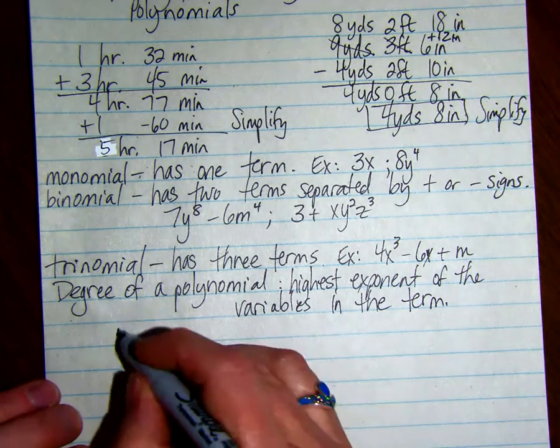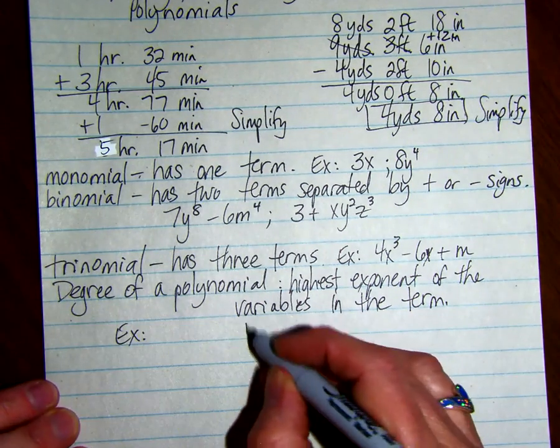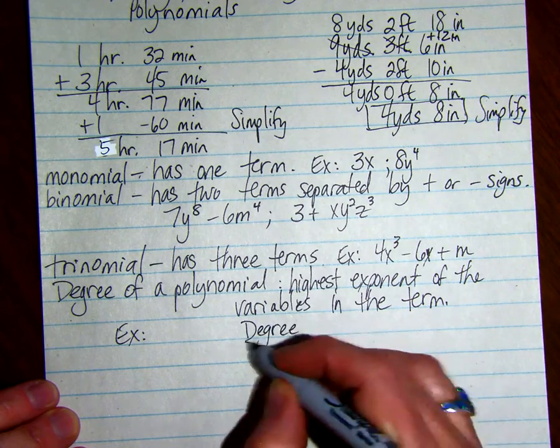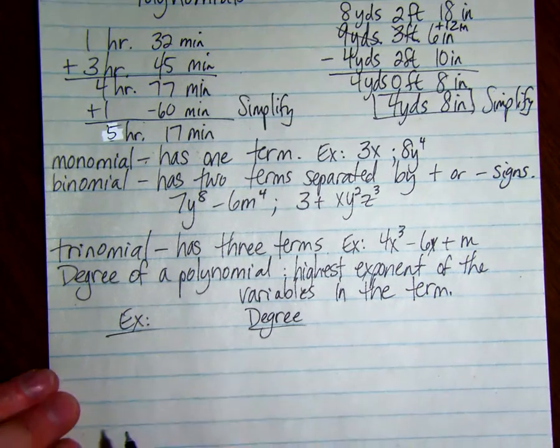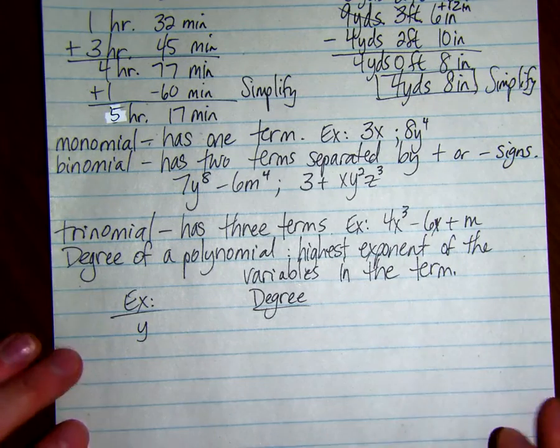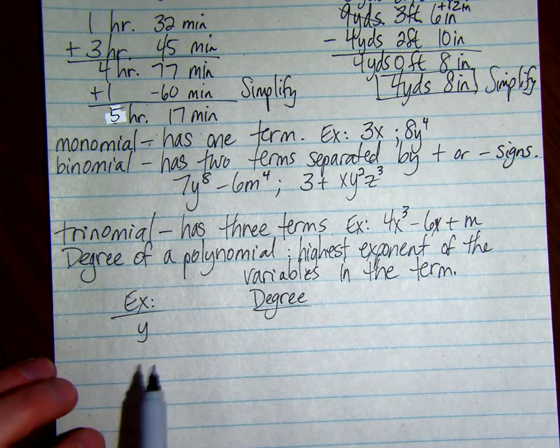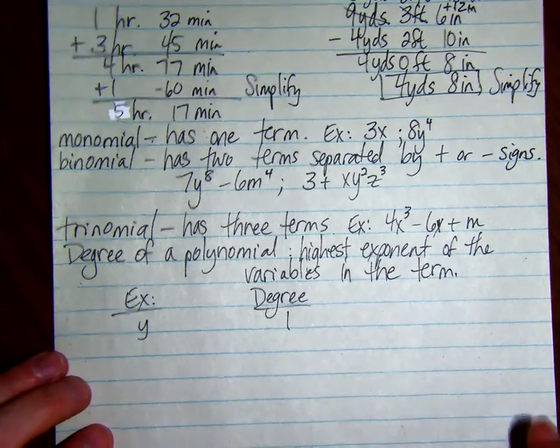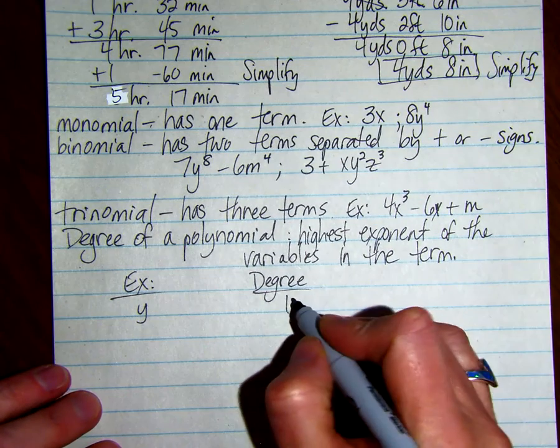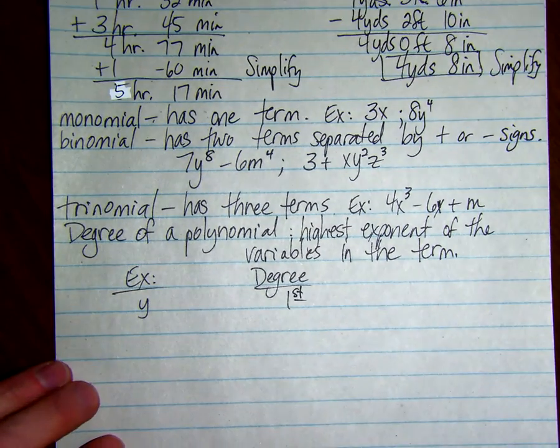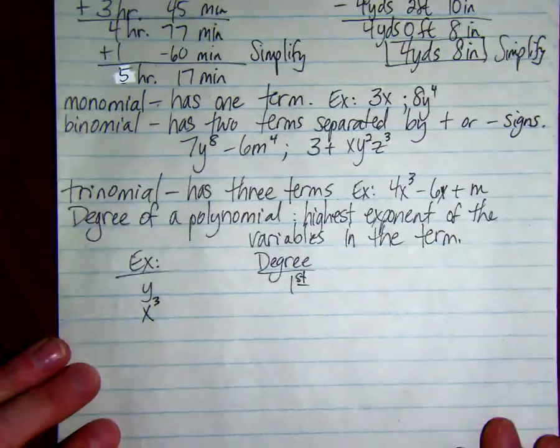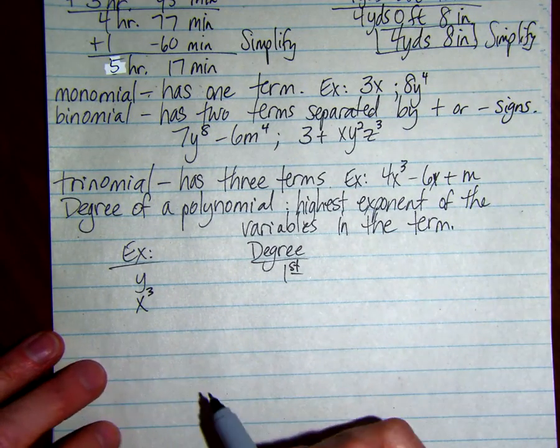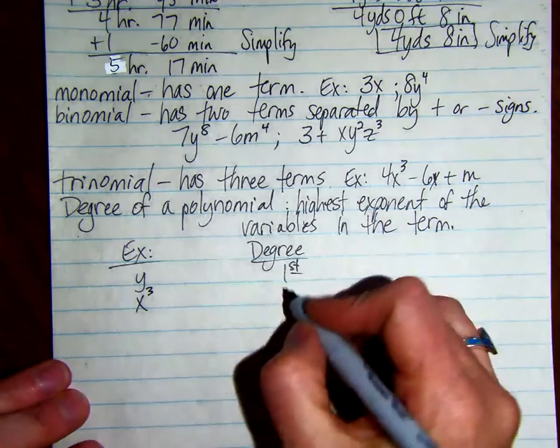Examples of degree: The first example is just a y. The exponent here is 1, so the degree is just 1, or you could say it's a first degree. x cubed - the exponent is 3, there's only one variable, so it's the third degree.